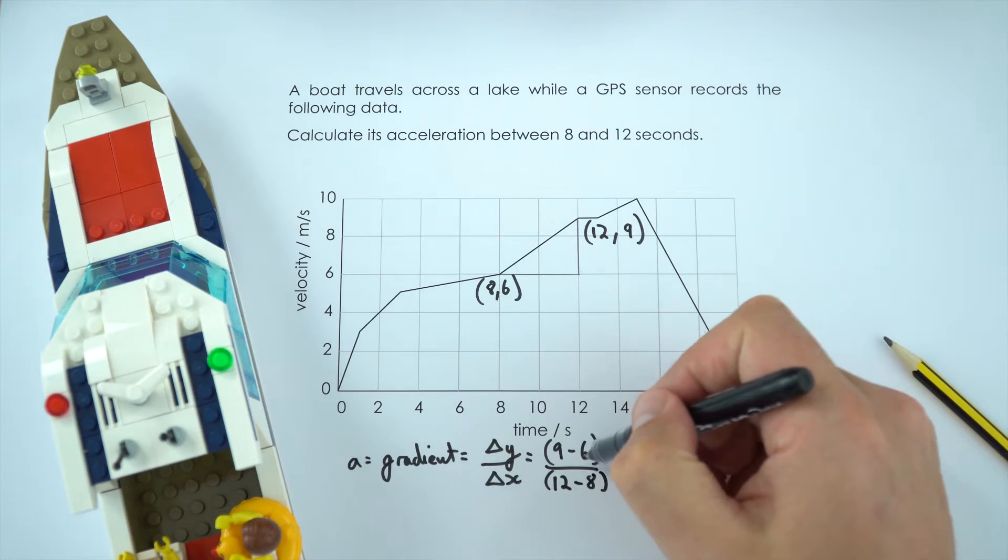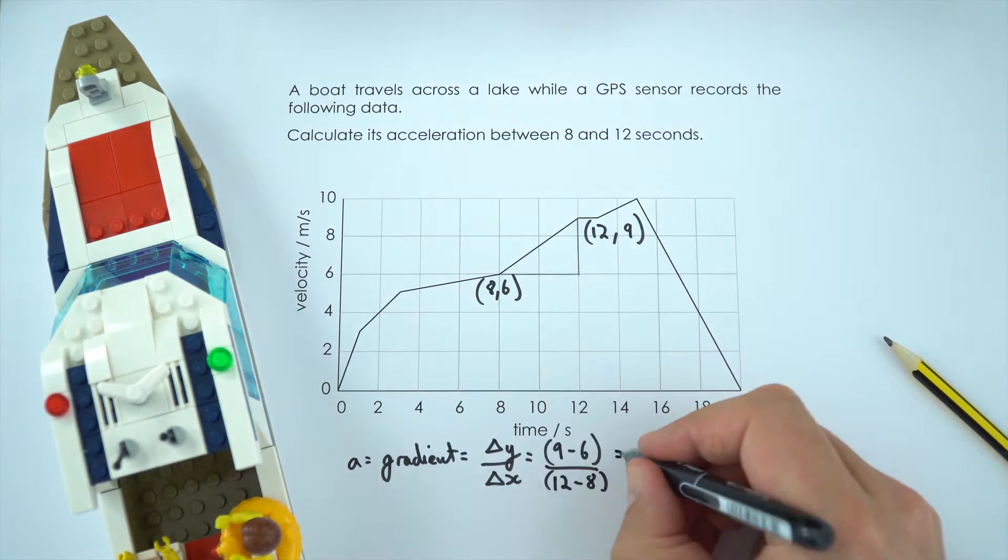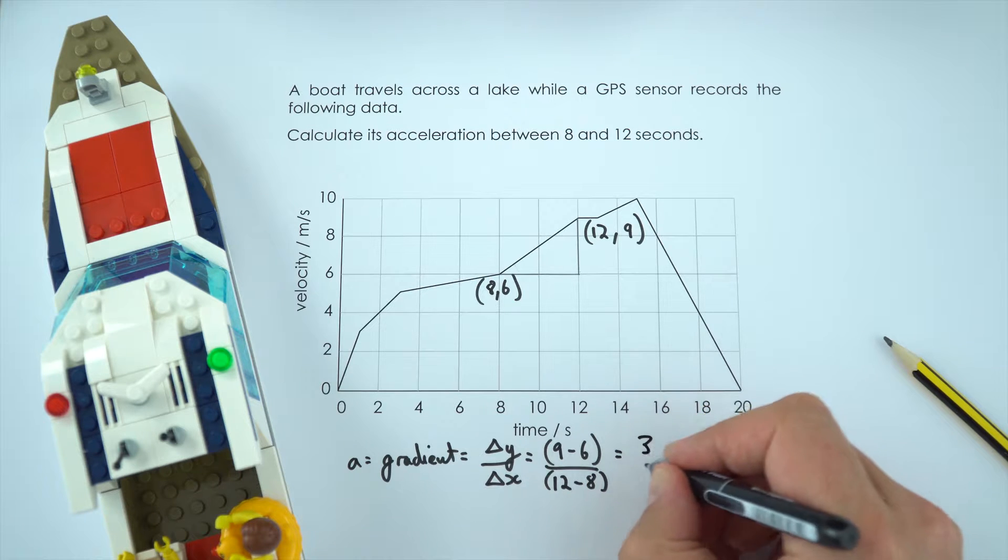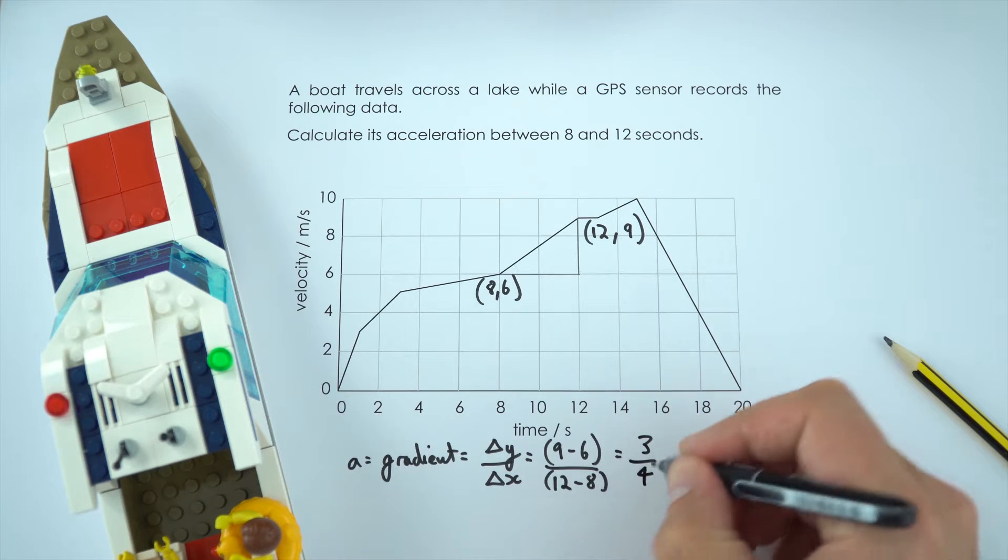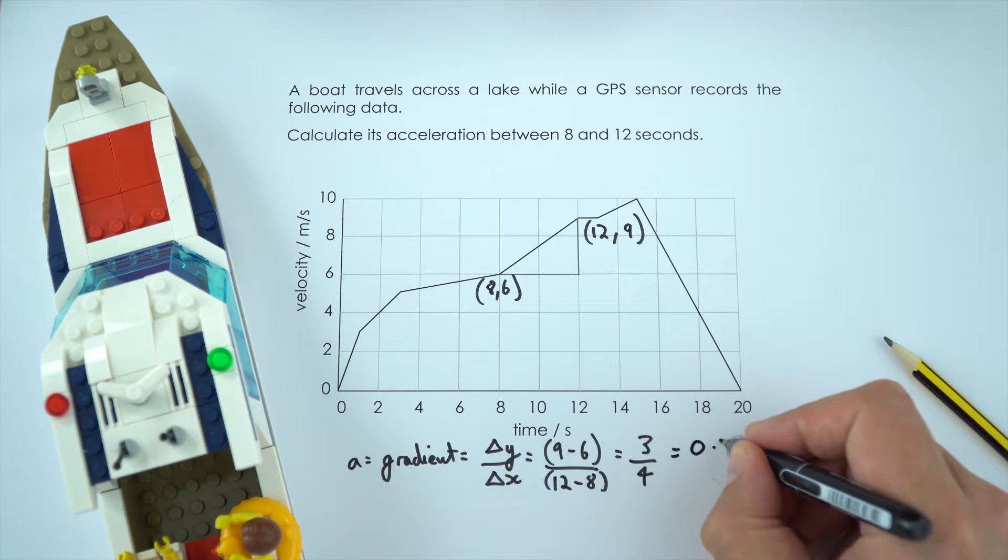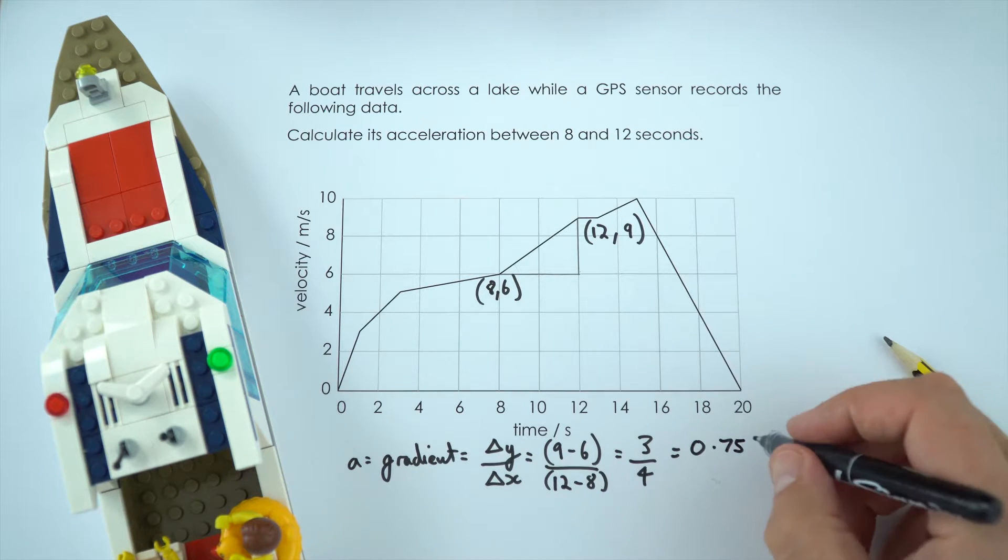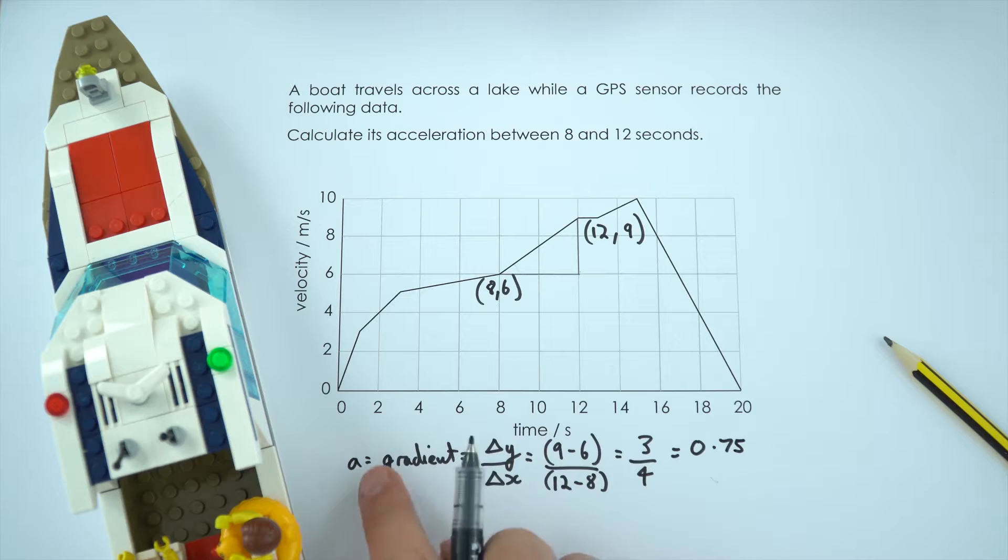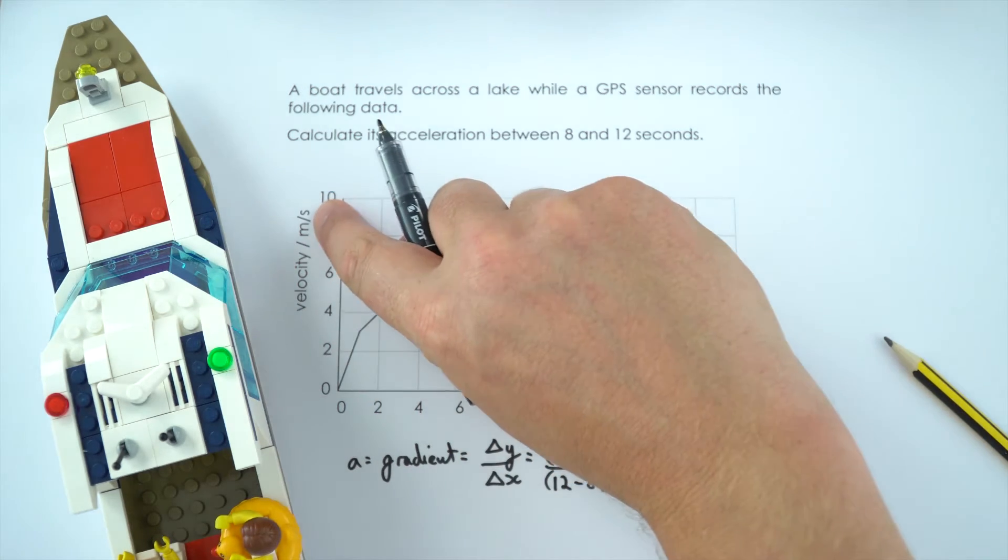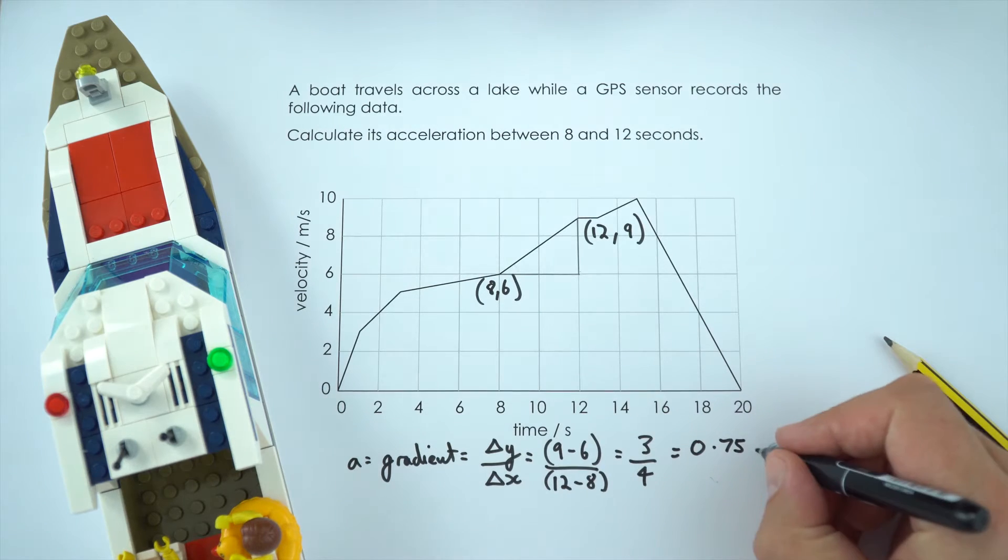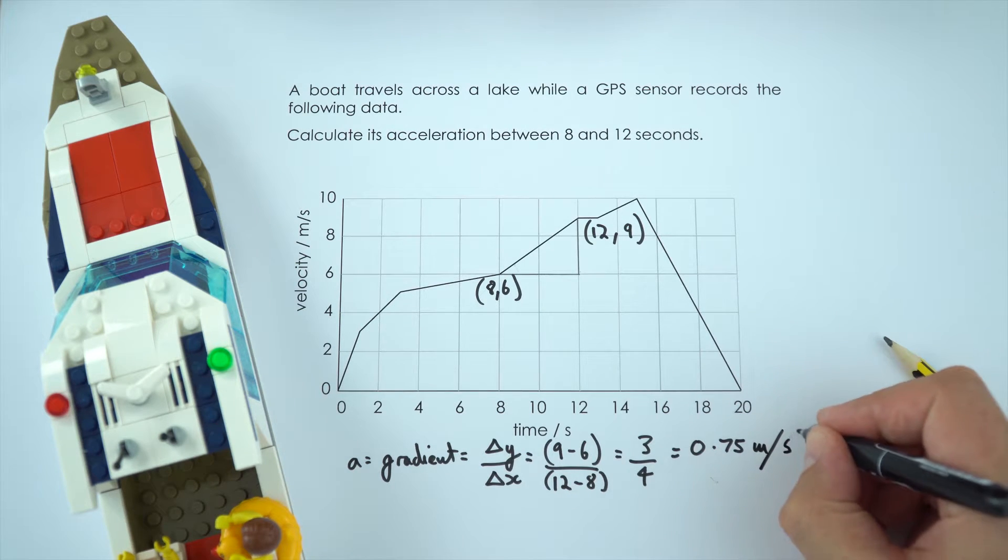And it's always worth showing a bit of work out to show how you've got these numbers. 9 minus 6 is 3, 12 minus 8 is 4. So that's just equal to 3 quarters which is 0.75. And because it's an acceleration we mustn't forget the units. Although it's a gradient it still has units, and here that's meters per second divided by seconds, so that's meters per second squared.